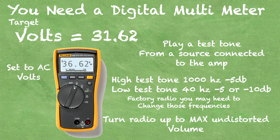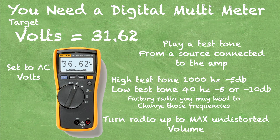You can get a digital multimeter at the cheap tool store for practically nothing. The target voltage is going to be 31.62 volts. Set the multimeter to AC — that's the squiggly line above the V. Then play a test tone from a source connected to the amp.